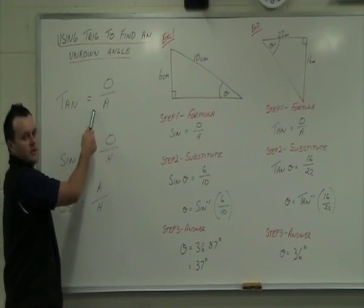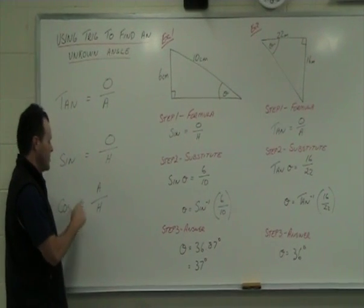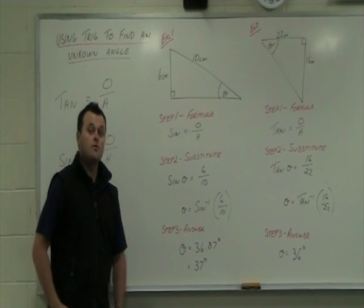Tan is equal to opposite over adjacent. Sin is equal to opposite over hypotenuse. And cos is equal to adjacent over hypotenuse. You'll need to know all of them.